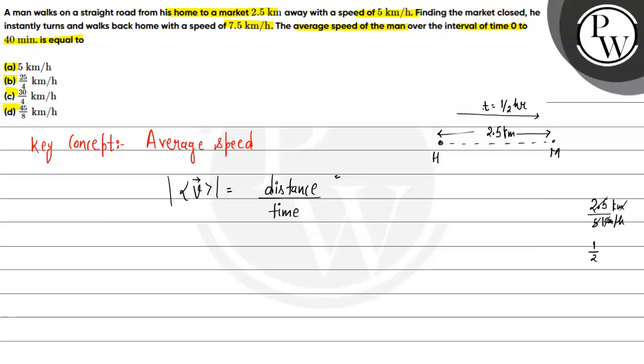Let's call this time T1. From home to market, how much time? It's 30 minutes. So the average speed over 0 to 40 minutes - now the next 10 minutes will be on.